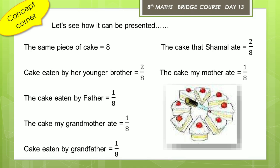Let us see how it can be presented. The total pieces of cake are 8. The cake that Shamal ate is equal to 2 upon 8. The cake eaten by her younger brother is also 2 out of 8, therefore it is represented as 2 upon 8.